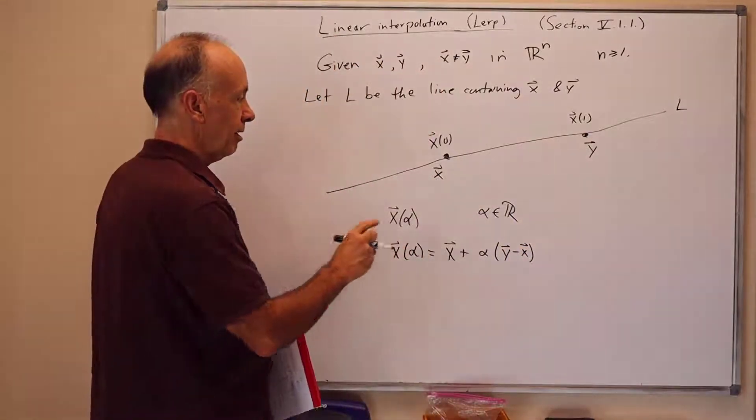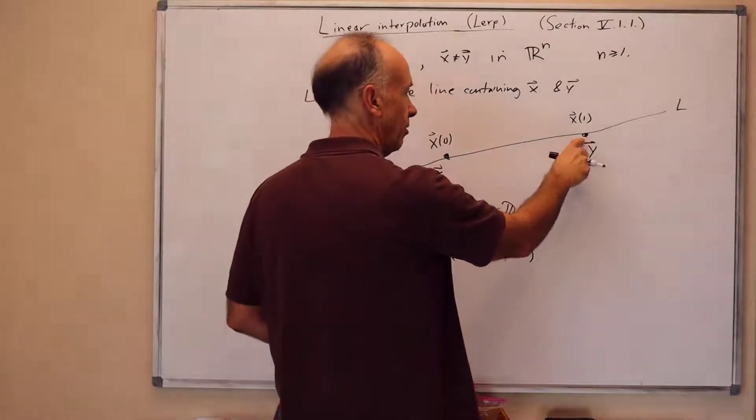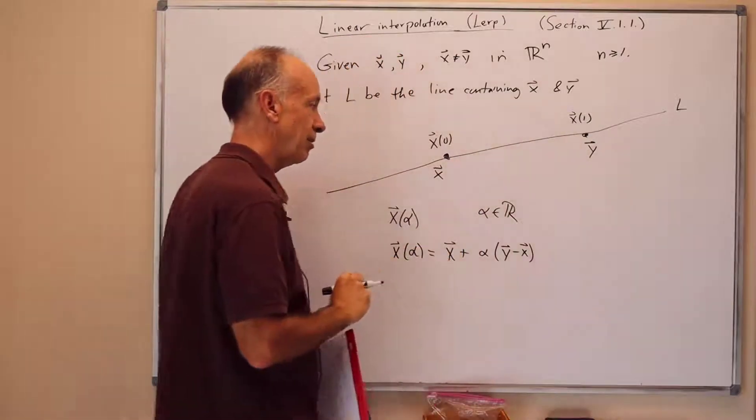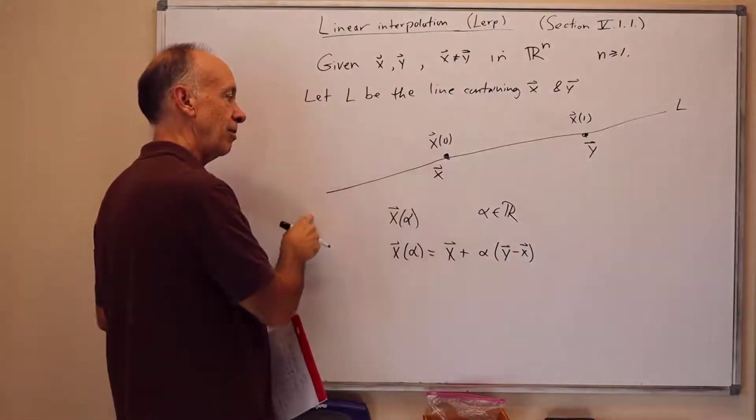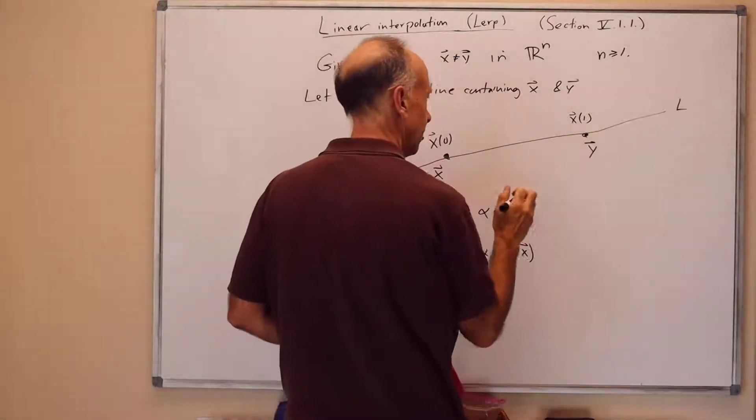When alpha is 0, we start off at x. When alpha is 1, we're at y. As alpha varies, we move at a steady rate from x to y. If alpha goes negative, we move at a steady rate this way, positive steady rate past y.